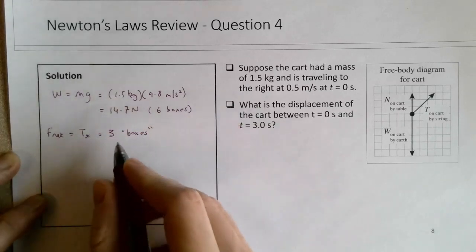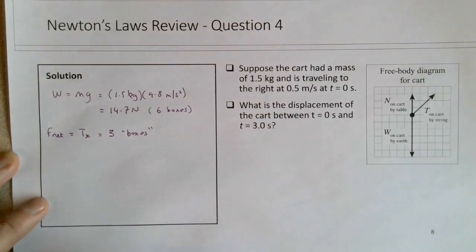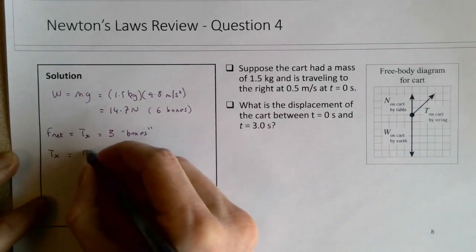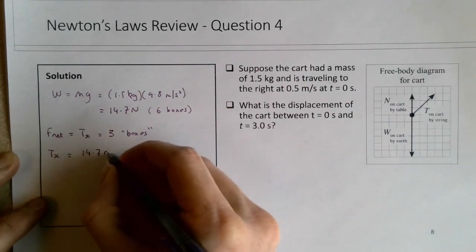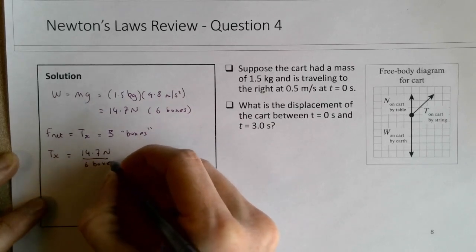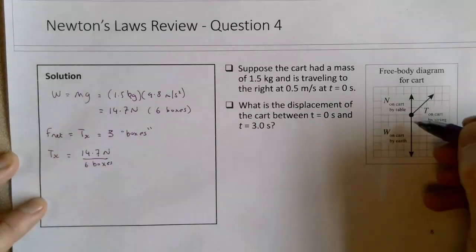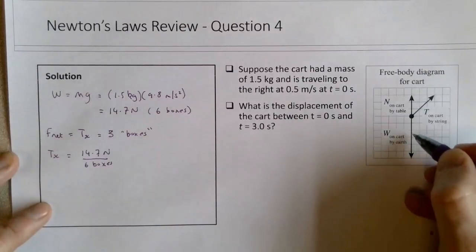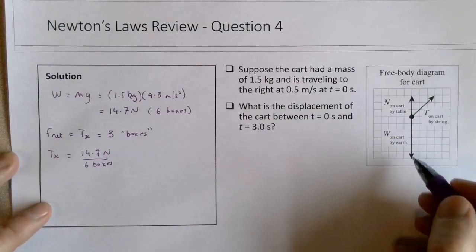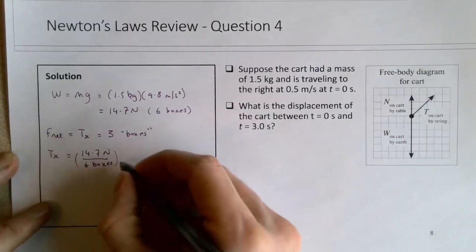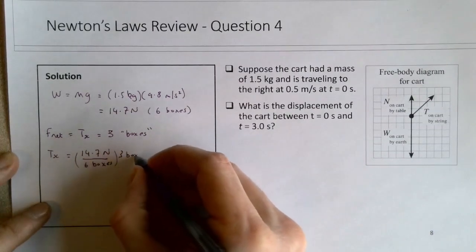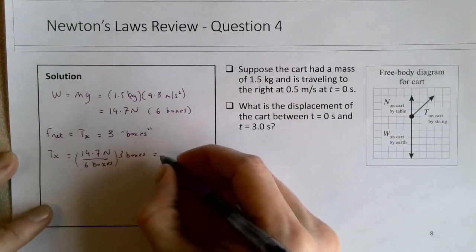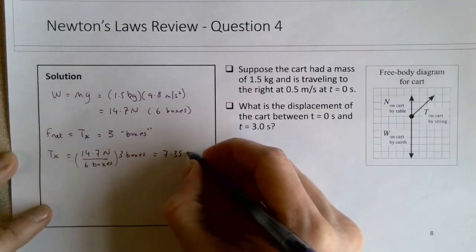So if we want to figure this out in terms of newtons, we would think that Tx is equal to 14.7 N divided by 6 boxes - so boxes as in boxes on the diagram, to figure out how big each individual square box is - times our 3 boxes. So that's exactly half of that, which is 7.35 N.